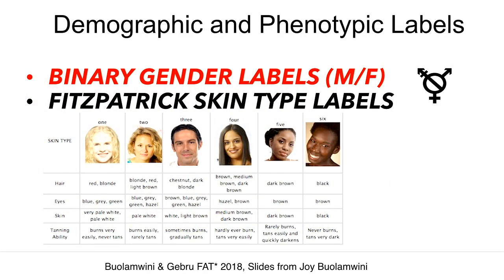We used the Fitzpatrick skin type classification system, where you can see it goes from lighter to darker. People have done this kind of analysis by race, but what does race mean? It's an unstable social construct across time and space. So we used something that was more objective.